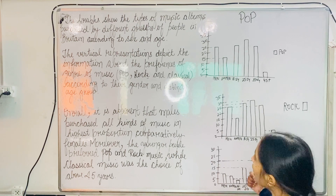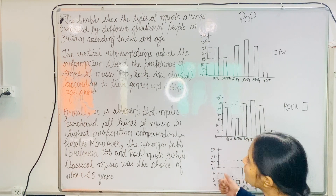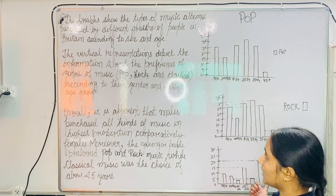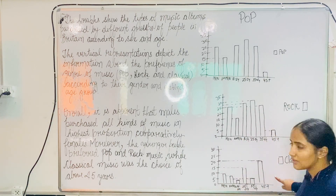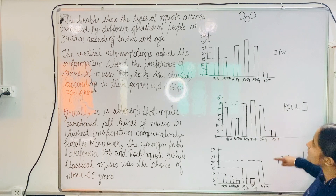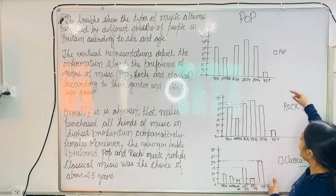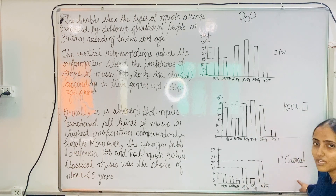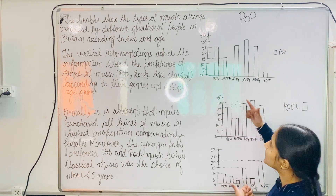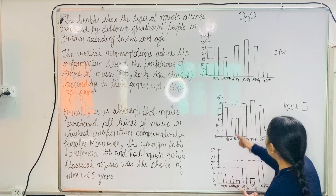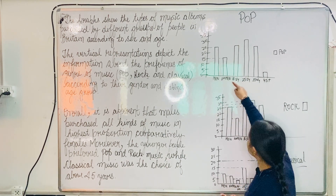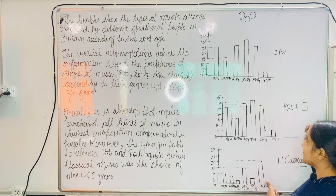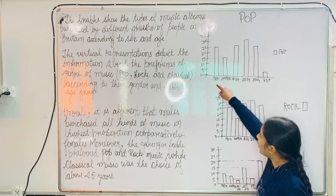The graphs show the types of music albums purchased by different groups of people in Britain according to their sex and age. There are 3 graphs depicting the types of music albums — pop, rock, and classical — purchased by different age groups of people in Britain according to their gender and age.